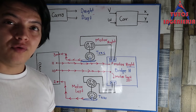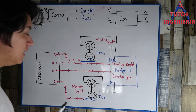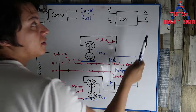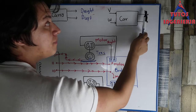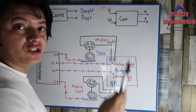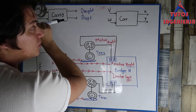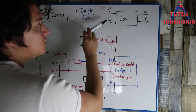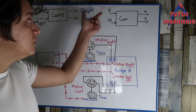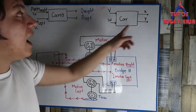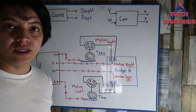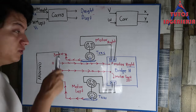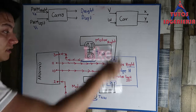In the last videos we looked at the model of the car — when I want to know what is the position x and y of the car. As inputs we need the linear velocity and the angular velocity. With those components I can achieve a desired point — that is the model we developed in the last videos.